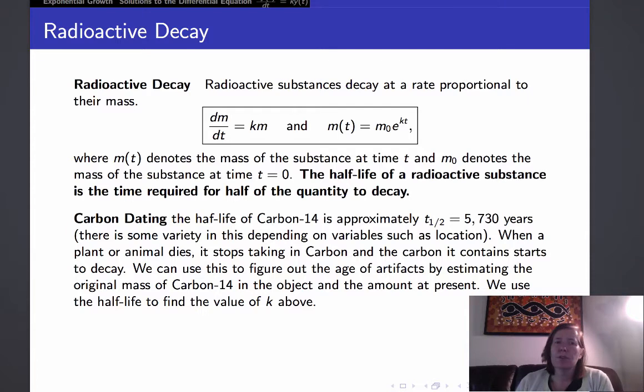One place where this is very useful is carbon dating of artifacts. The half-life of carbon-14 is approximately t1/2 equal to 5,730 years. And there's a little variety in this depending on variables such as location and so on. What happens is when a plant or animal dies, it stops taking in carbon, and the carbon it contains starts to decay. And we can use this to figure out the age of artifacts by estimating the original mass of carbon-14 in the object and checking the amount at present.